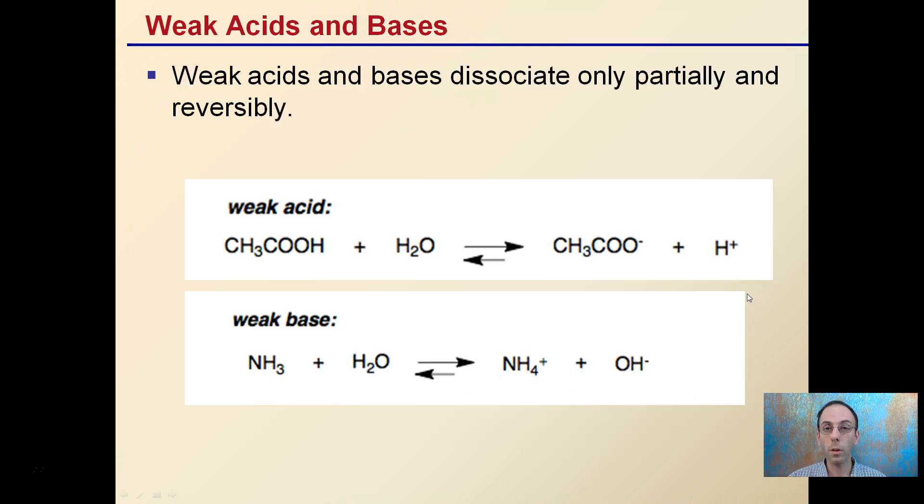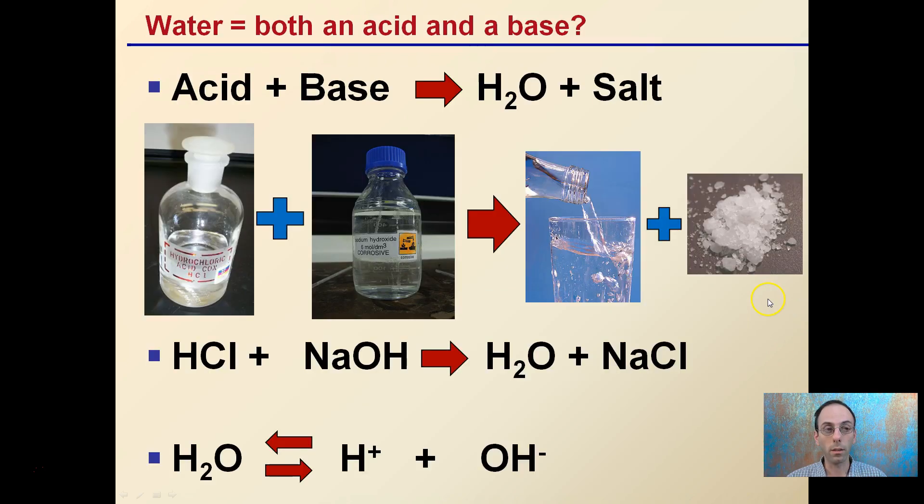Weak acids and bases, they only partially break apart. Now that they only partially break apart, they can kind of flip back and forth, and that's what these arrows refer to. So sometimes we see strong acids, strong bases, weak acids, weak bases, and this is giving you the background of the chemistry that's going on behind these.